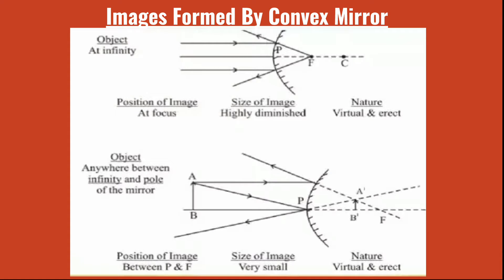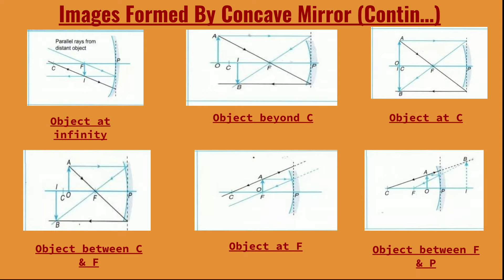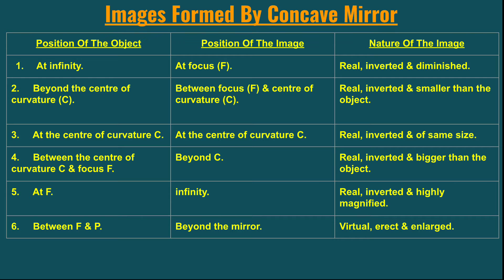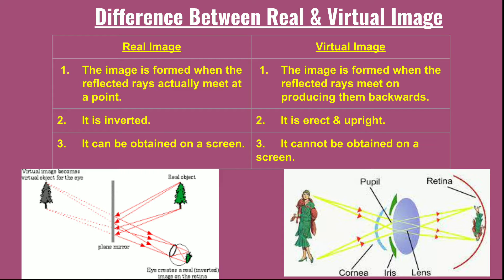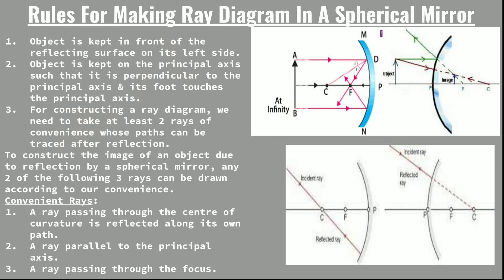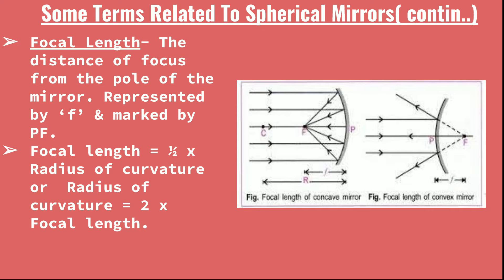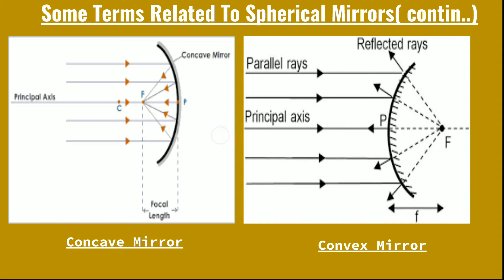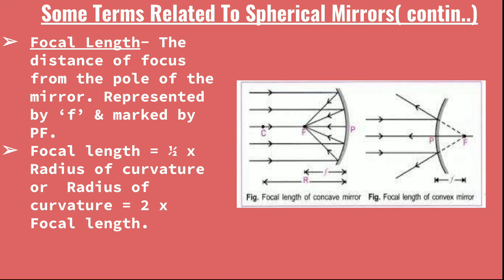This is Kasturi. Today I'm going to continue with the discussion of the light energy chapter according to the ICSE syllabus, Class 8. In my last video I discussed the images formed by the concave mirror, the difference between real and virtual images, the rules for making ray diagrams in a spherical mirror, and some terms related to the spherical mirror, mainly focal length and focus.